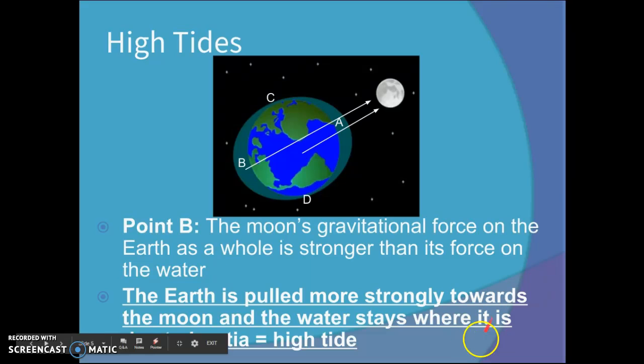So the Earth is pulled more strongly towards the Moon and the water stays where it is due to inertia. That's why you end up getting a high tide. So point A and point B we see a high tide.